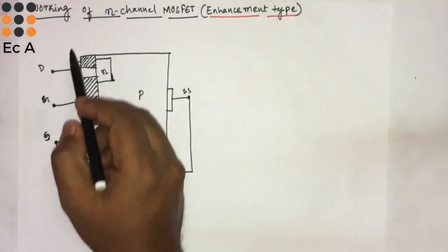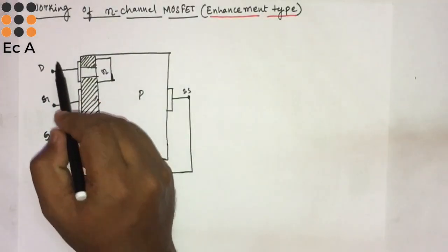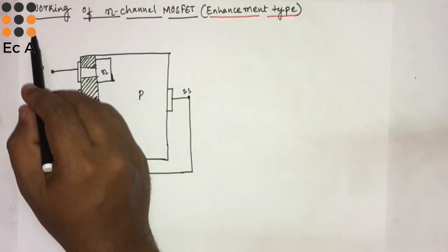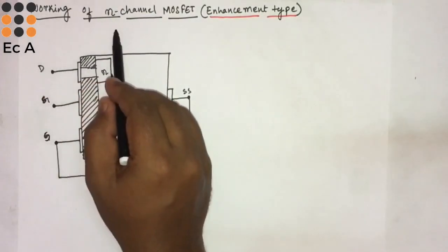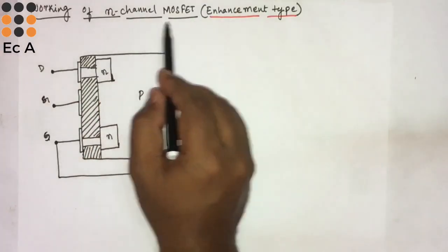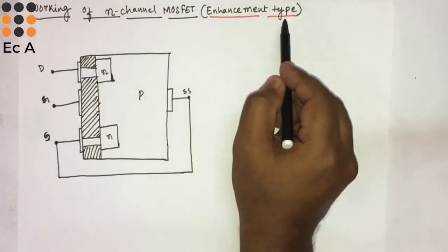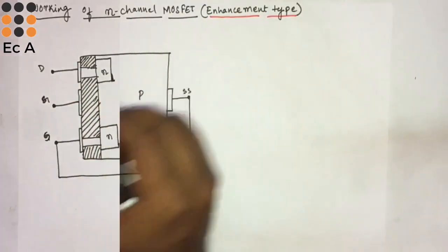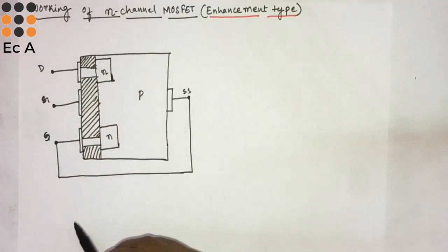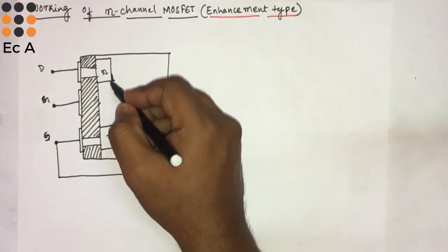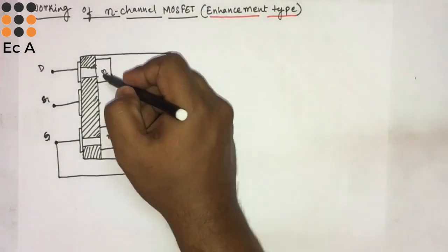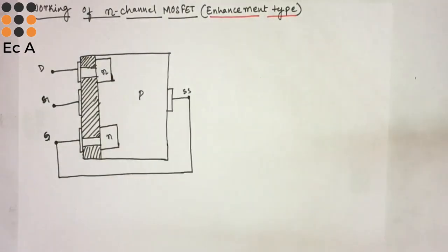Hello friends, welcome to EC Academy. In this lecture we will discuss the working of N-channel enhancement type MOSFET. The enhancement type of MOSFET doesn't have any channel in between the doping region.